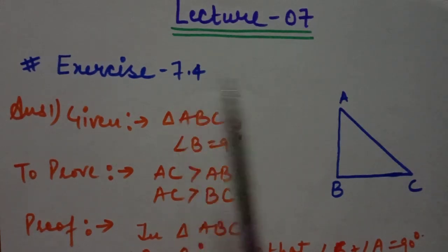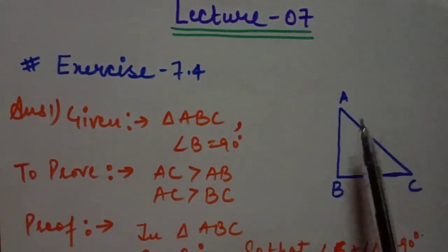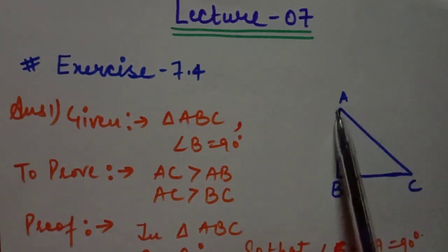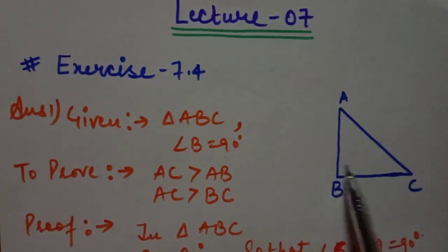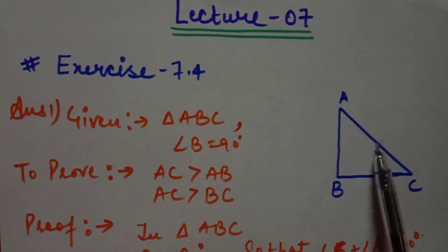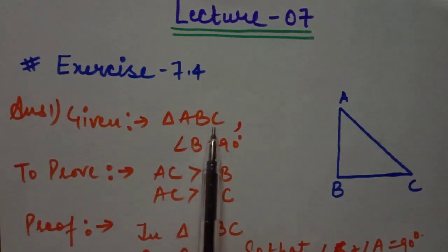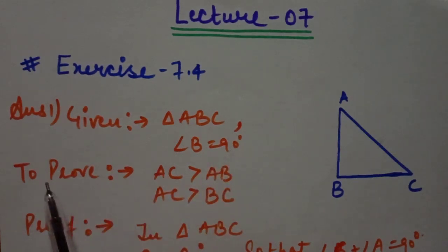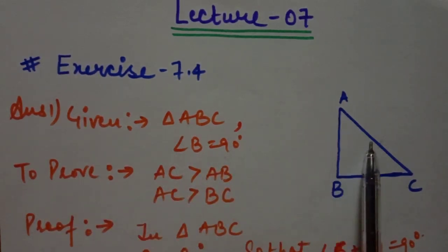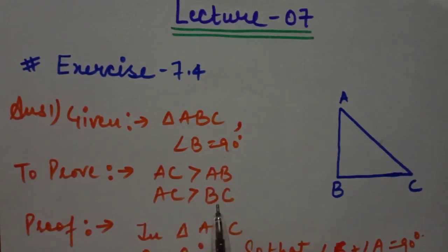We will take triangle ABC, a right-angled triangle in which angle B is 90 degrees, and we have to prove that the hypotenuse is the longest side. Given: triangle ABC and angle B equals 90 degrees. To prove: AC is the longest side, meaning AC is greater than AB as well as AC is greater than BC.